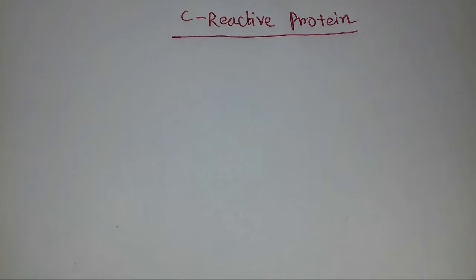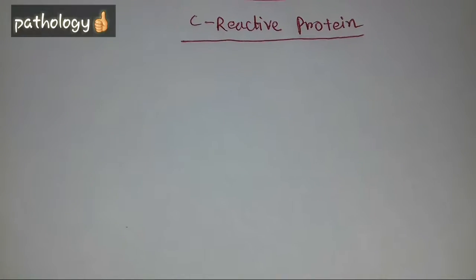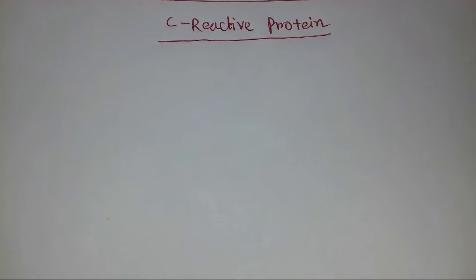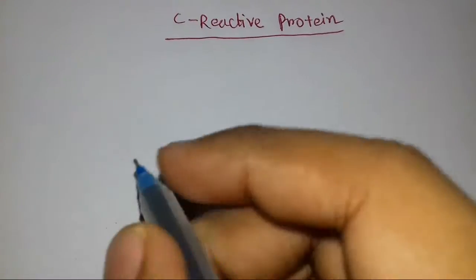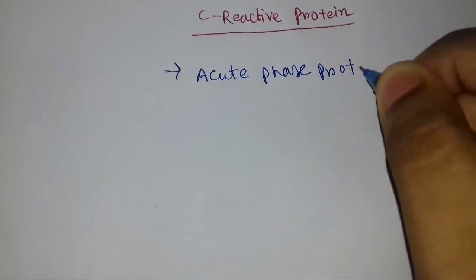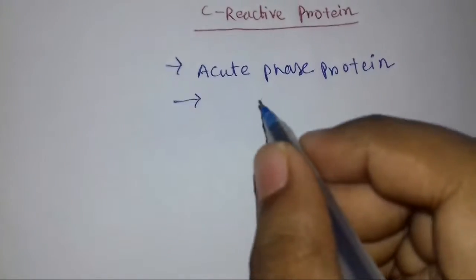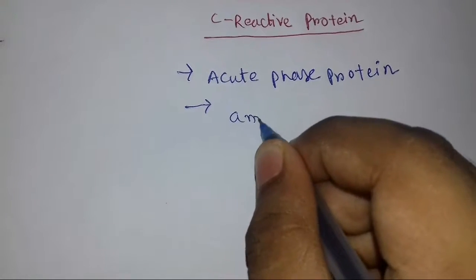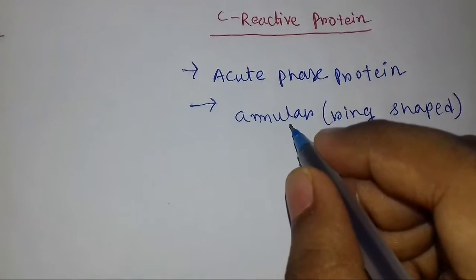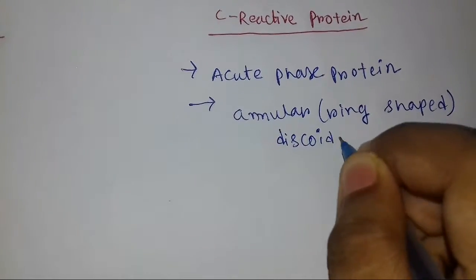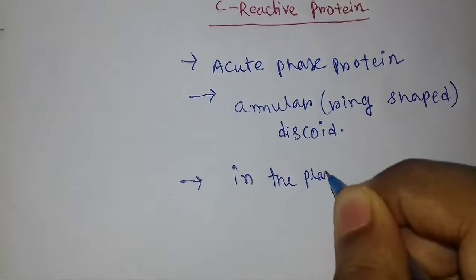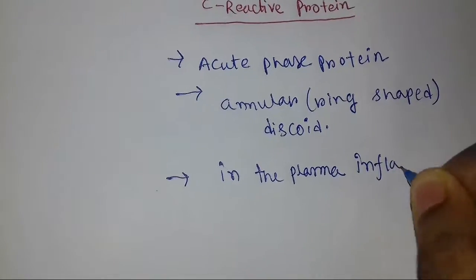Hello guys, today we are going to discuss about a very important topic in pathology — the C-reactive protein. We are going to know what is the C-reactive protein and why it is very important for us to know. C-reactive protein is basically an acute phase protein. It is found in the plasma during any inflammatory conditions.